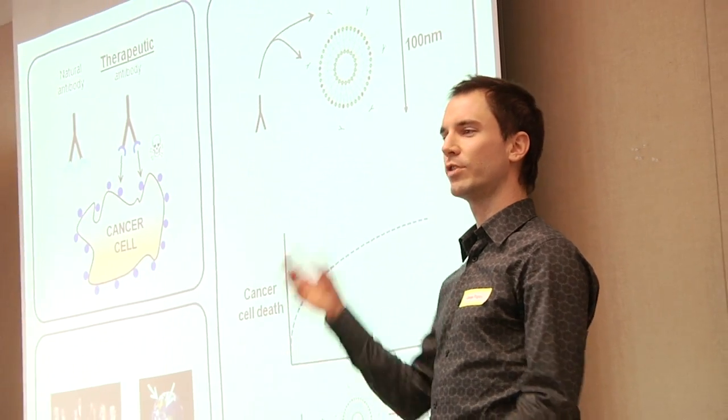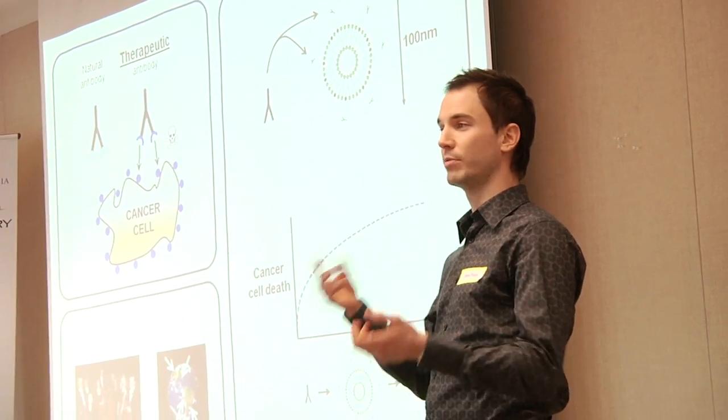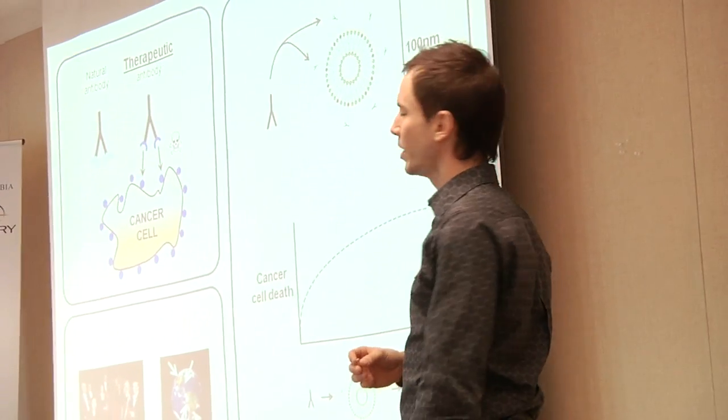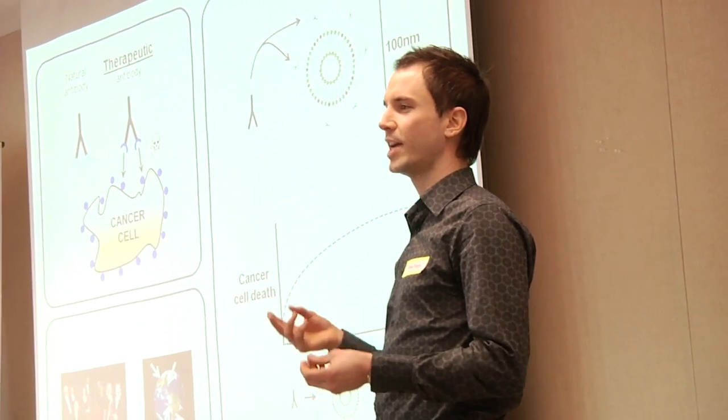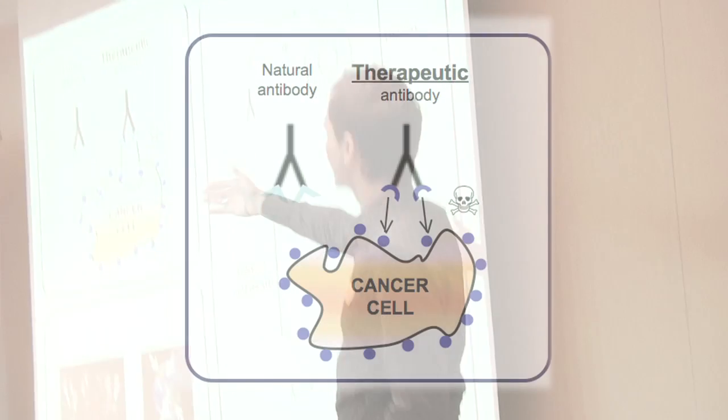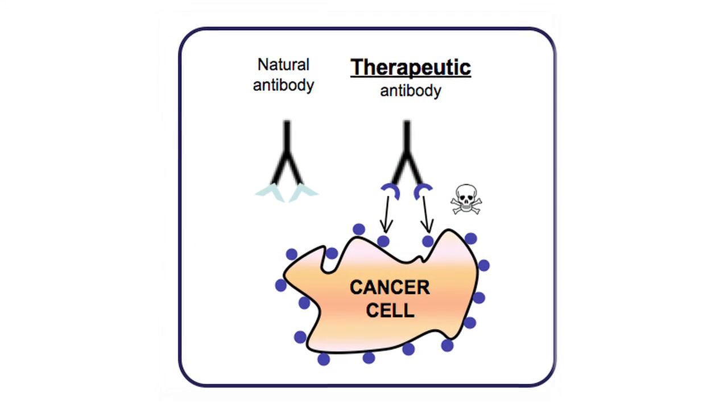The way they work is that they attach to foreign particles, which are eventually cleared by the system. The way that cancer gets around this detection by antibodies is that, as you can see, natural antibodies don't recognize the cancer cells.